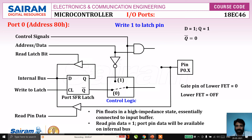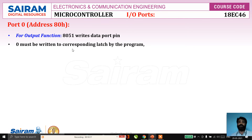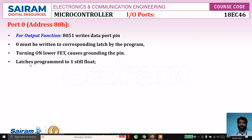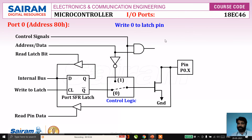When the read-pin signal is one, port pin data is available on the internal bus. For the output function — when the 8051 writes data to the port pin — we must write zero to the corresponding latch. With D = 0, Q = 0 and Q-bar = 1; Q-bar = 1 drives the lower FET gate, turning it on, which creates a short circuit to ground, providing logic zero to the port pin. The upper FET remains off since control signal is zero.